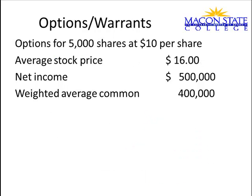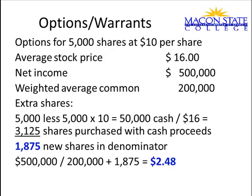Let's try one for options or warrants. There are options outstanding for 5,000 shares that can be bought at $10 per share. The average stock price for the year was $16. Here's your net income and weighted average common. The extra shares issued are 5,000. We subtract however many shares we could buy with the cash received: 5,000 times $10 equals $50,000, divided by the $16 average stock price gives 3,125 shares we could repurchase. So the net new shares in the denominator would be 1,875. Adding that to the weighted average common gives a new earnings per share of $2.48.